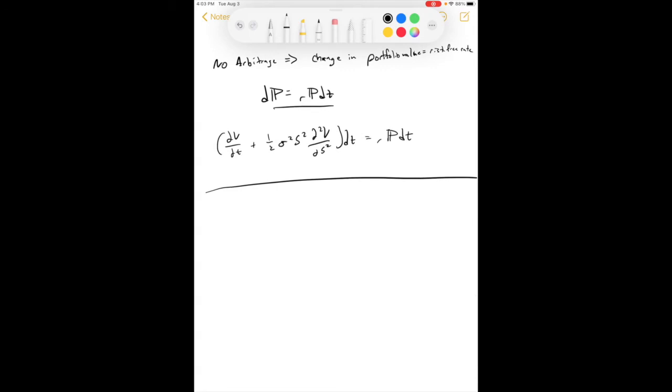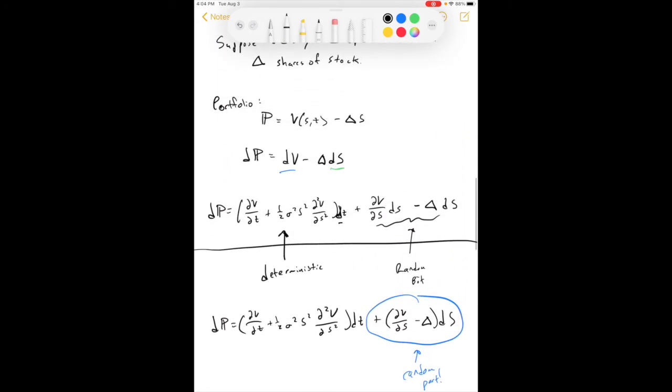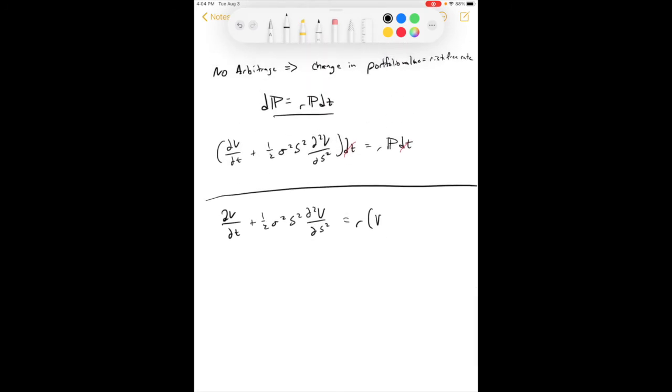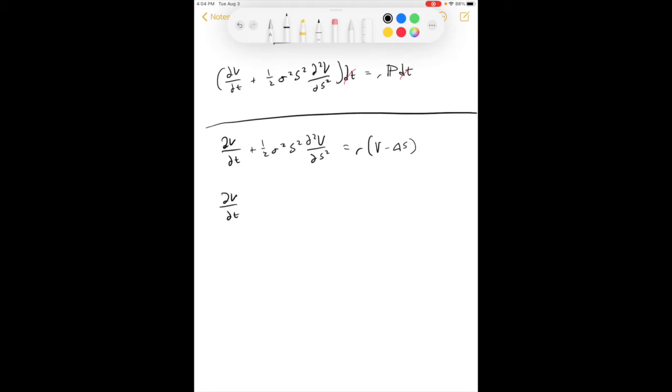So, from here, we can see that these dt's are just going to kind of cancel out. So, then we'll get dv/dt plus one-half sigma squared s squared and so on is equal to r. What's our portfolio value from back up here? This one. So, that's v minus delta s. So, if we multiply that through dv/dt plus one-half sigma squared s squared second derivative of v with respect to s is equal to rv minus r delta s.